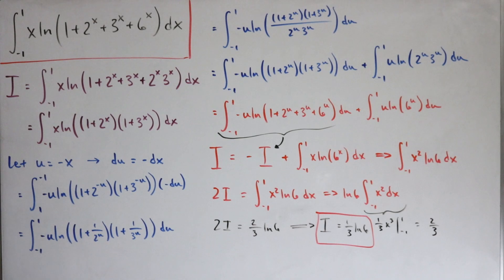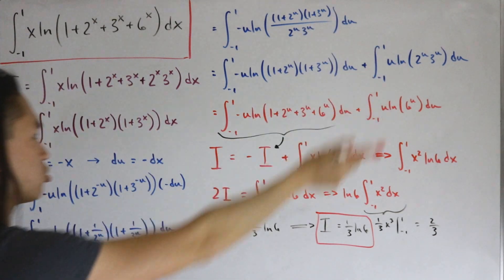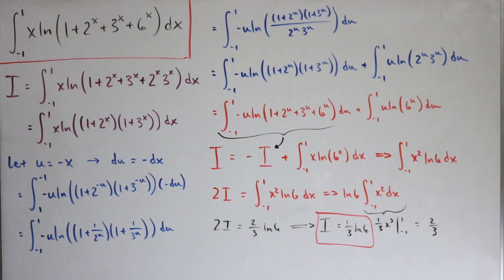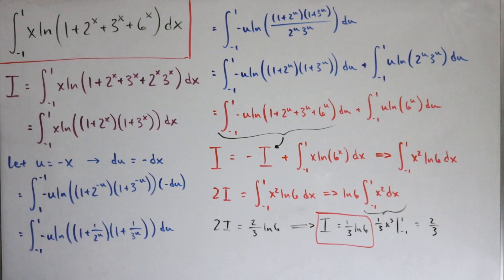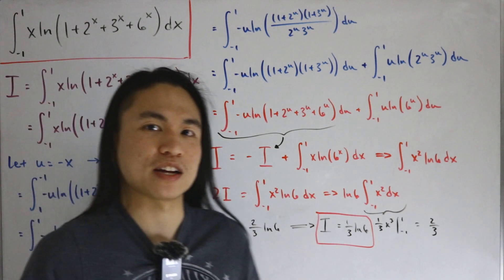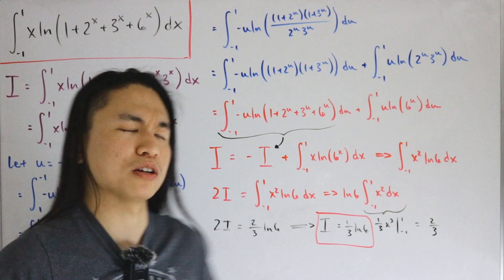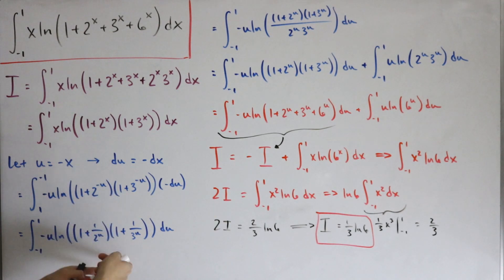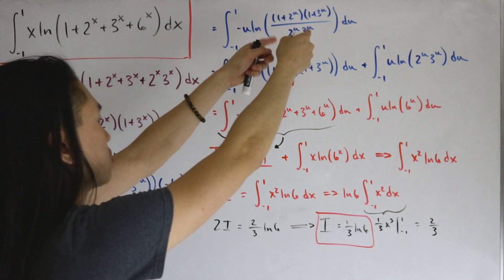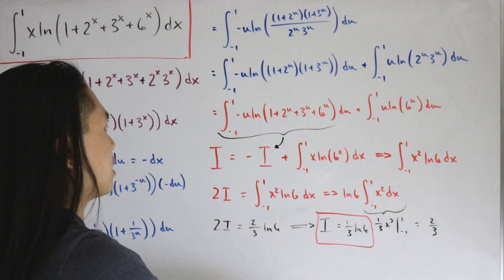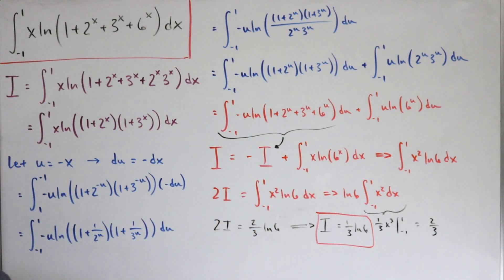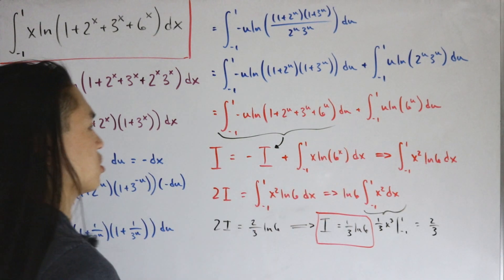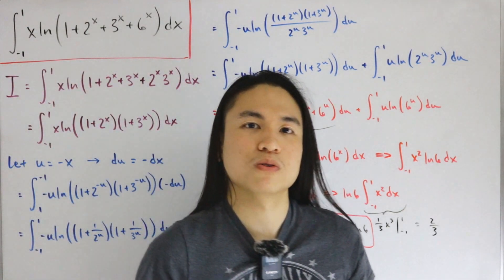It looks complicated at first glance, but the tricks involved are really elegant — un-FOILing the binomials, using algebra rather than heavy calculus, and exploiting the symmetric bounds to create a circular integral equation. Reverting back to the beginning and solving for I makes everything fall into place neatly.